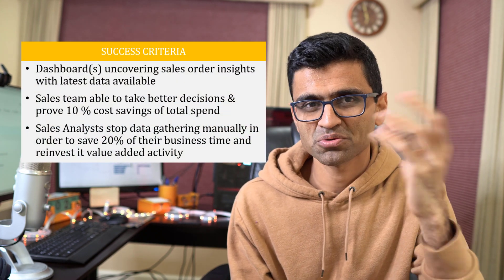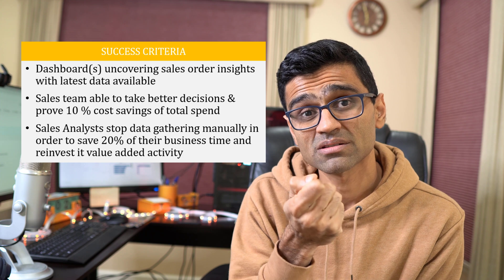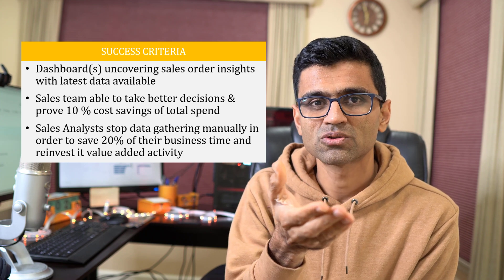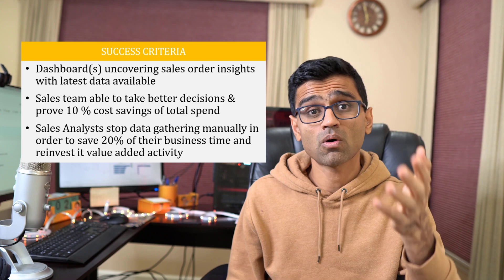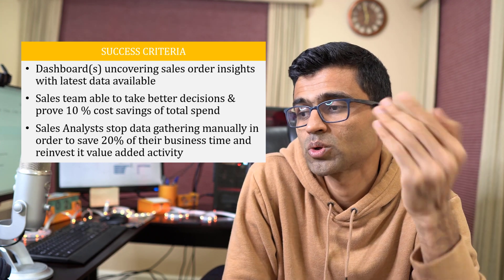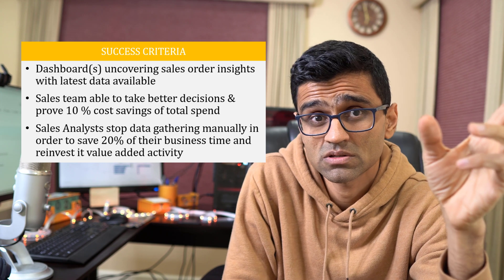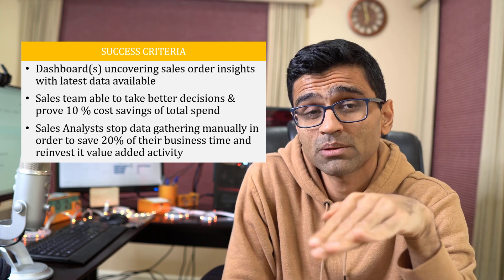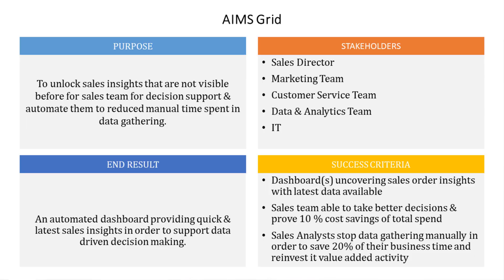The fourth component is Success Criteria. Companies spend a lot of money on these projects, so at the end you need measures to gauge the success of the project. For example, after having this dashboard you might make business decisions that help save cost by 10%, or today's sales analysts spend so much time merging Excel files from different regions and you want to save 20% of that manual time, or a simple metric could be a 10% increase in sales. Whatever it is, you record those into the Success Criteria section.